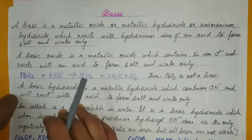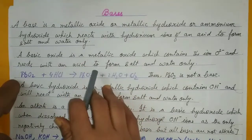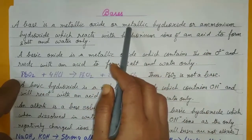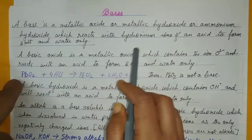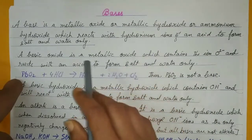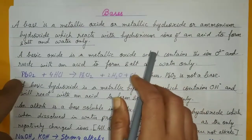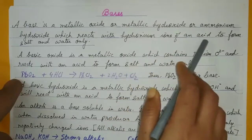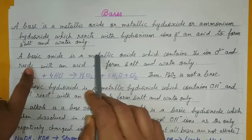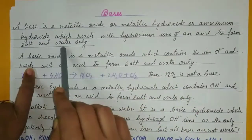Let's begin. A base is a metallic oxide or a hydroxide — we can include ammonium hydroxide also, though ammonium does not come under metallic. A base is a metallic oxide or metallic hydroxide, also ammonium hydroxide, which reacts with the hydronium ion of the acid to form salt and water only. Acid in water produces the hydronium ion, as discussed in the previous video.